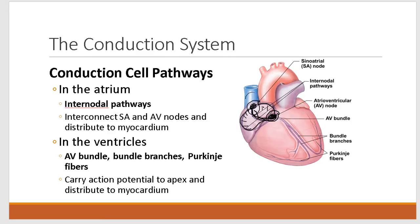Down in the ventricles, the conducting cells are organized into the AV bundle, which takes the stimulus down into the interventricular septum — the wall separating the two ventricles. The AV bundle separates into the right bundle branch, going down the right side of the septum, and the left bundle branch, going down the left side. Finally, at the bottom or apex of the heart, we have the Purkinje fibers, which distribute the action potential to the contractile cells of the ventricles, or the ventricular myocardium.